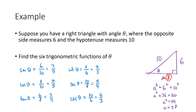SOHCAHTOA helps us figure out sine, cosine, and tangent pretty easily, and then we have formulas for the other three. The good news is that sine, cosine, and tangent really are the more common trig functions. We will see cotangent, secant, and cosecant occasionally, but most of the work in terms of applications is typically handled by sine, cosine, and tangent. So SOHCAHTOA is a handy thing to know because those are the ones we'll see most often.